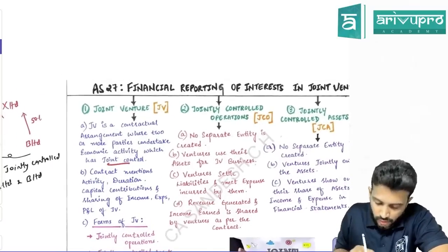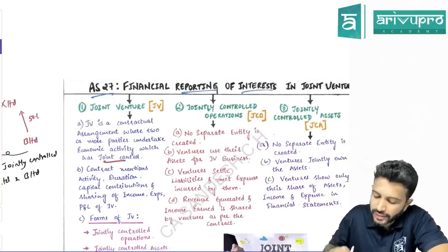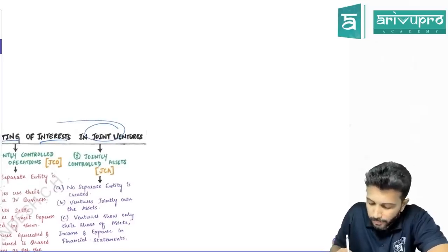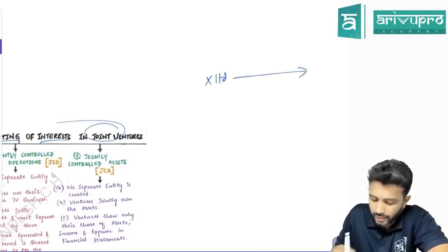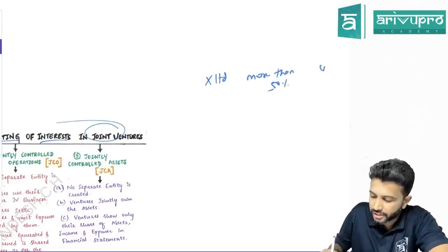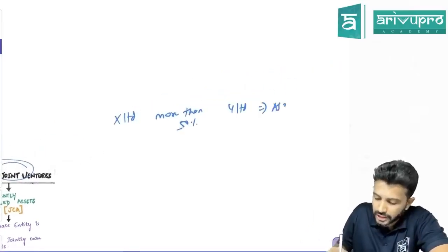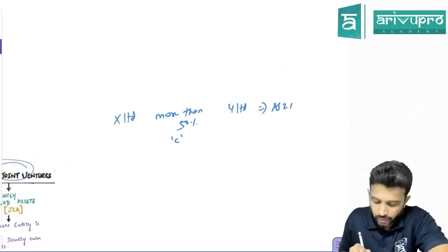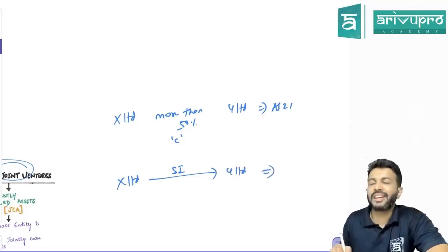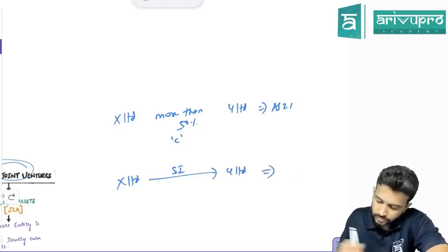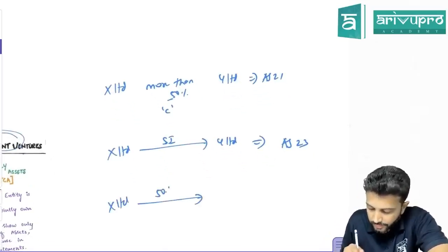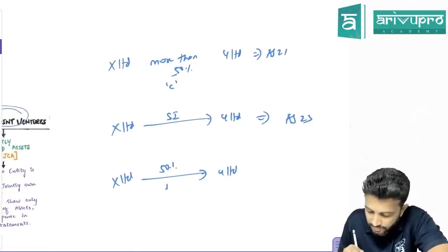AS 27 talks about financial reporting of interest in joint ventures. If X Limited has more than 50 percent equity shares in Y Limited, you apply AS 21 because you have control. If X Limited has significant influence in Y Limited, you apply AS 23 which talks about associate accounting. If X Limited has exactly 50 percent in Y Limited, then we say we have joint control.